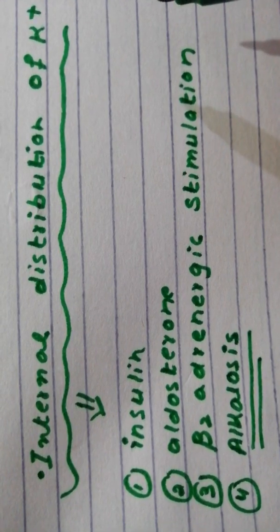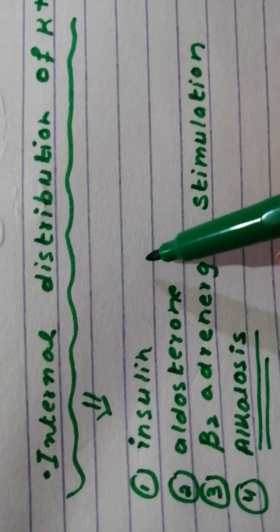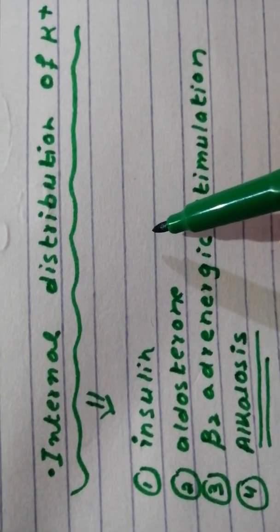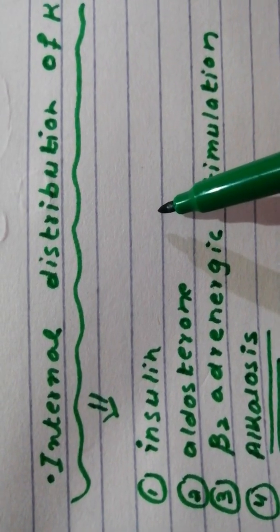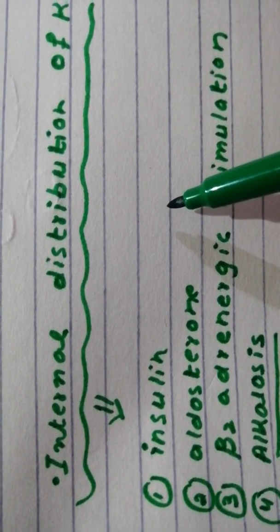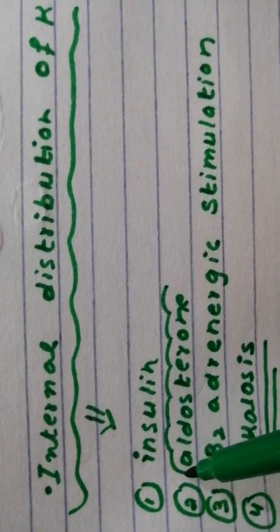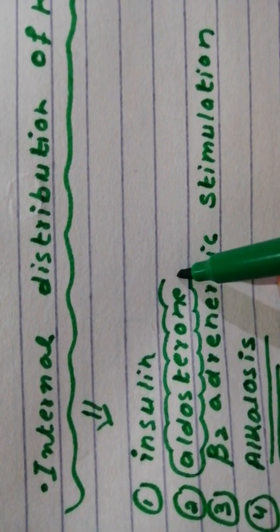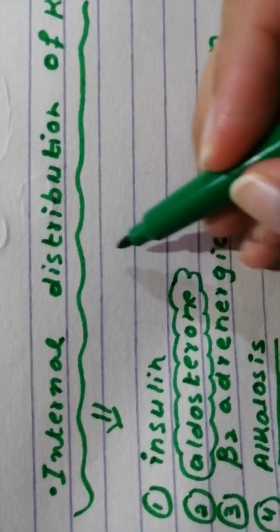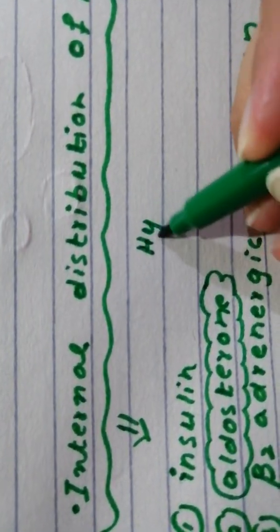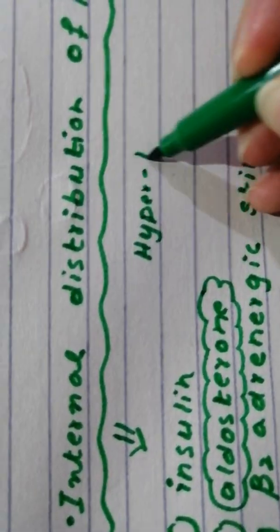In a person with insulin-deficient diabetes mellitus, after a meal, the rise in potassium ECF concentration is greater than in a normal person. Same with aldosterone - patients that do not produce aldosterone often develop hyperkalemia, which is pretty bad.